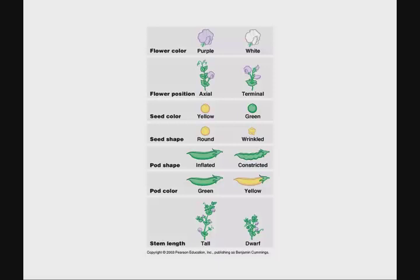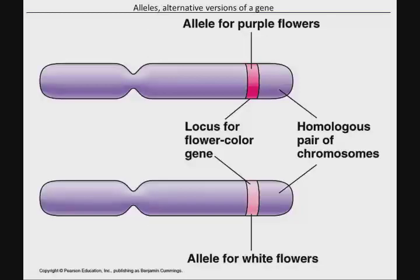Mendel looked at purple flowers versus white flowers, the position of the flower on the plant, the color of the seeds — many things that he was able to determine were passed from one generation to the next. This comes back to the idea that we are diploid, meaning one of each chromosome pair is from our mother and one is from our father.